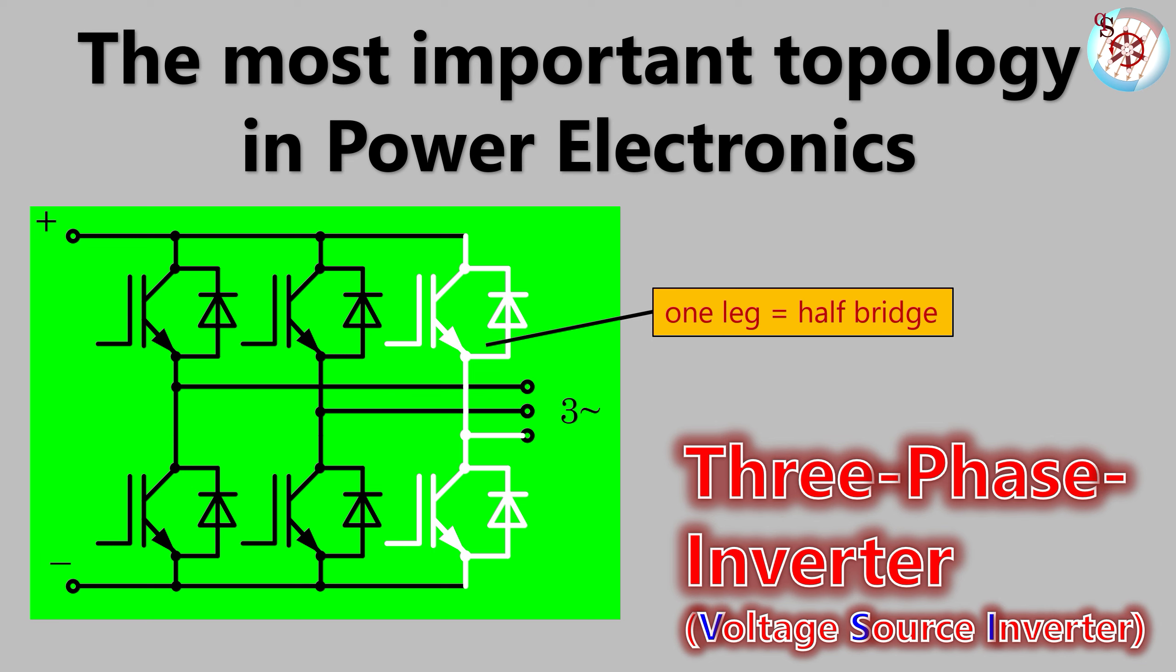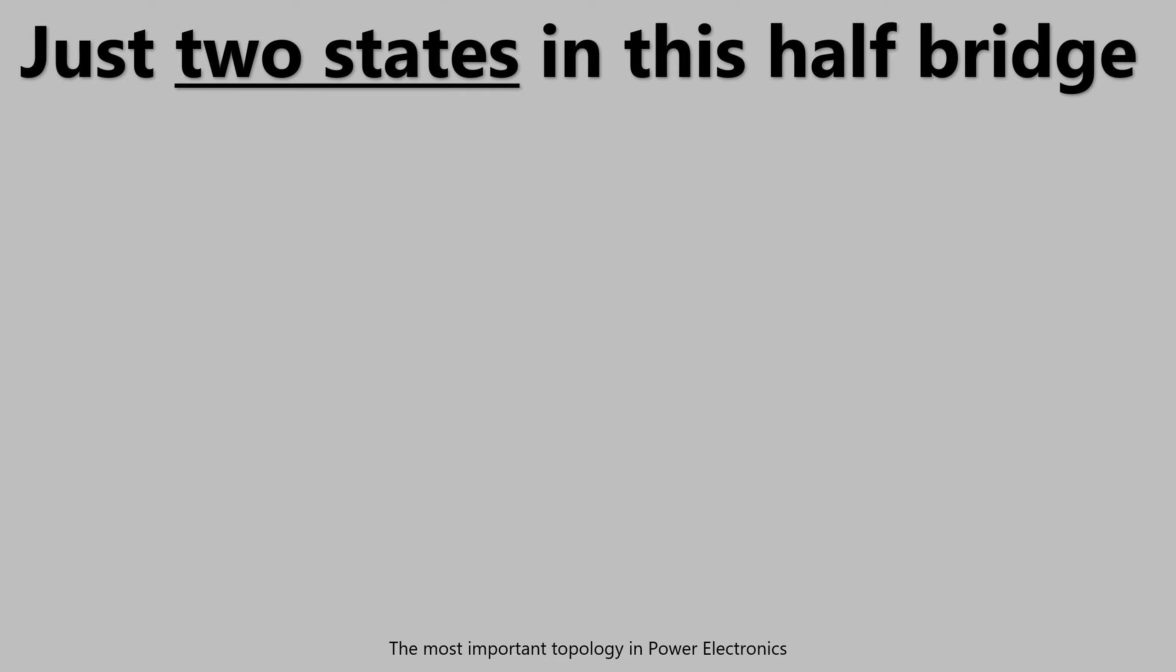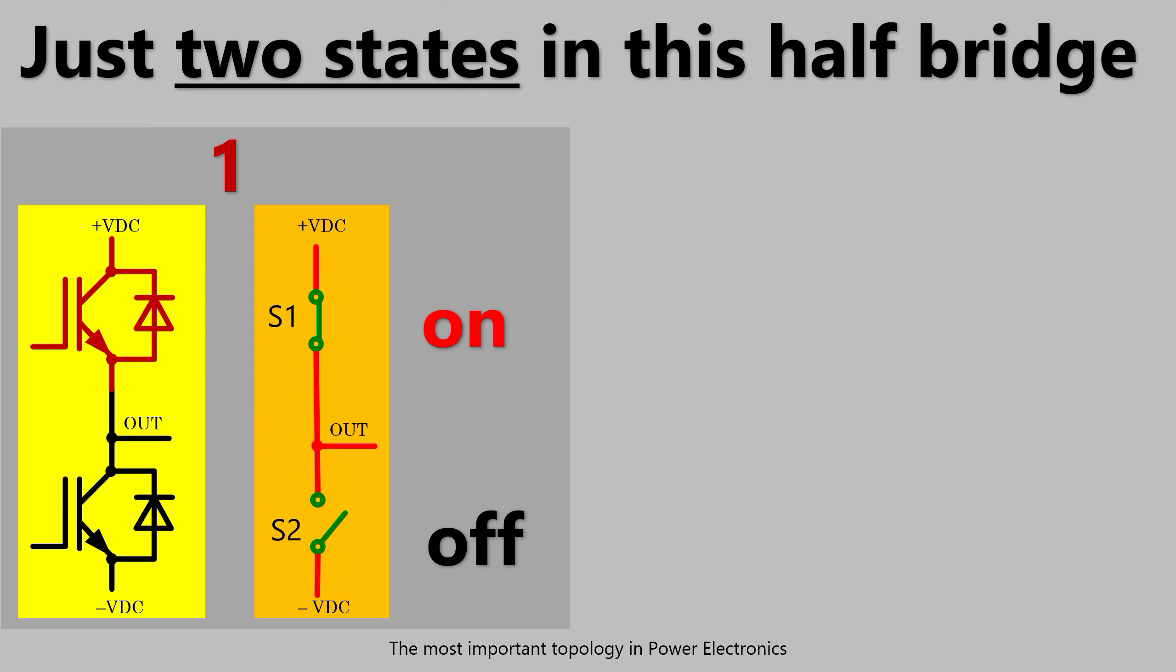This LEG, which I honored by naming it the most important topology in power electronics, has, and this might surprise you, just two states of operation. State 1, which is actually the name to describe the state. The upper switch is closed, the lower switch is open.